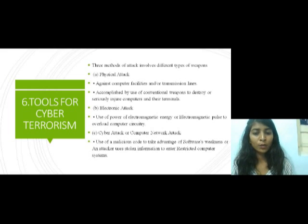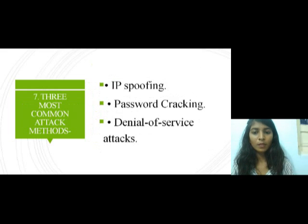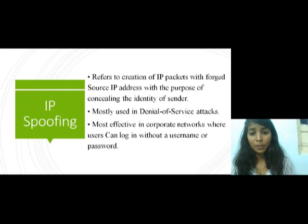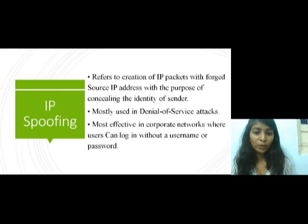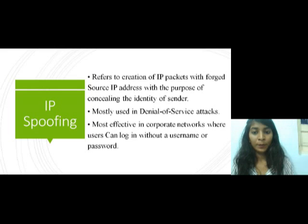The three most common attack methods are IP spoofing, password cracking, and DoS. IP spoofing is the creation of IP packets with a forged source IP address, with the purpose of concealing the identity of the sender. IP spoofing is mostly used in DoS attacks — the attacker tries to forge an IP address and hide the sender's true identity.